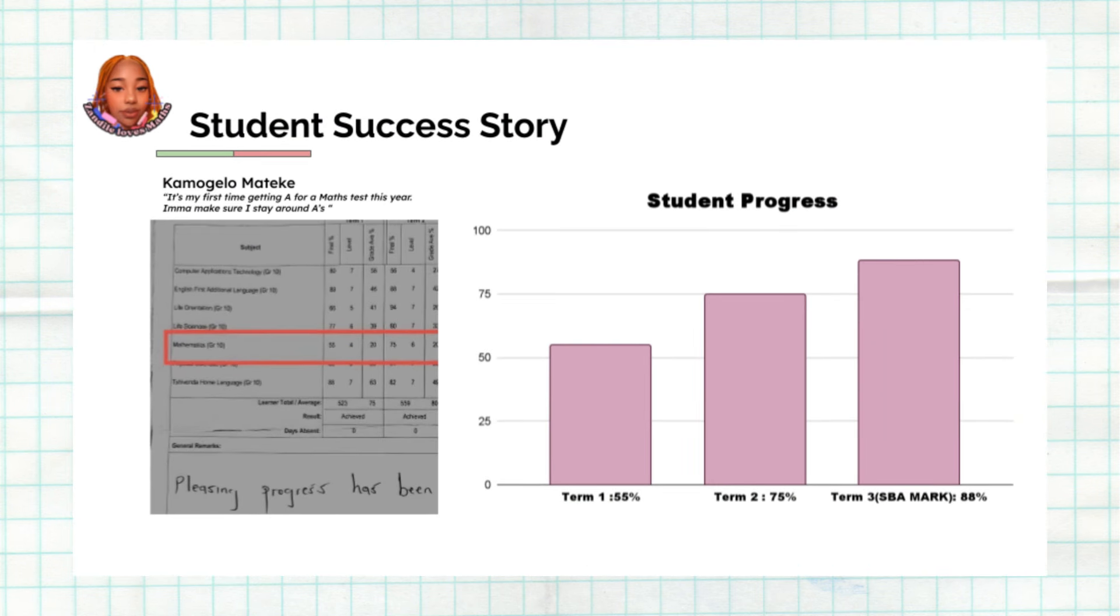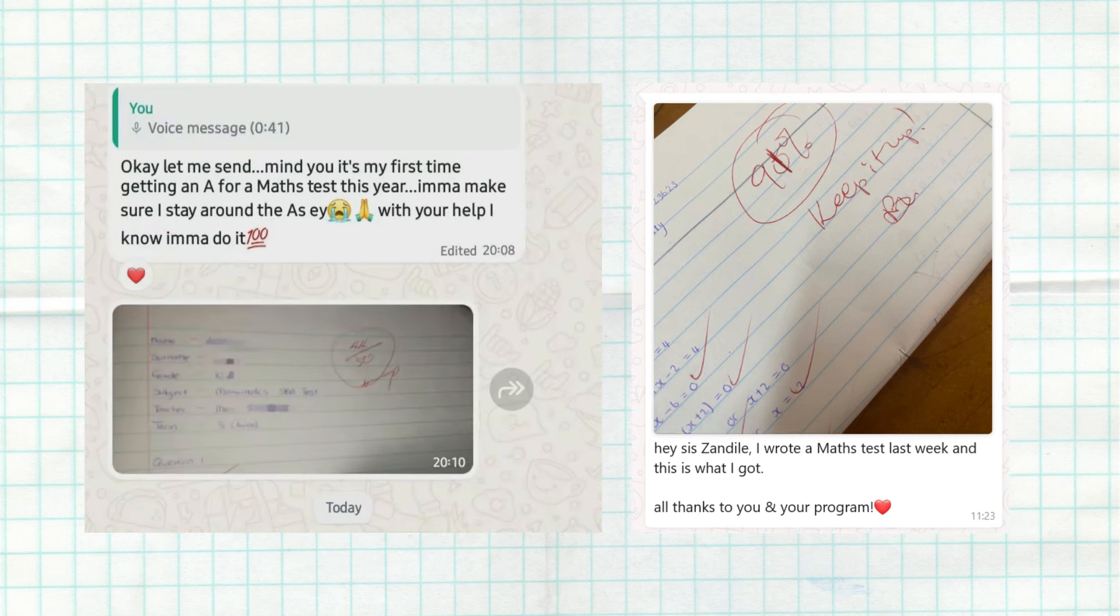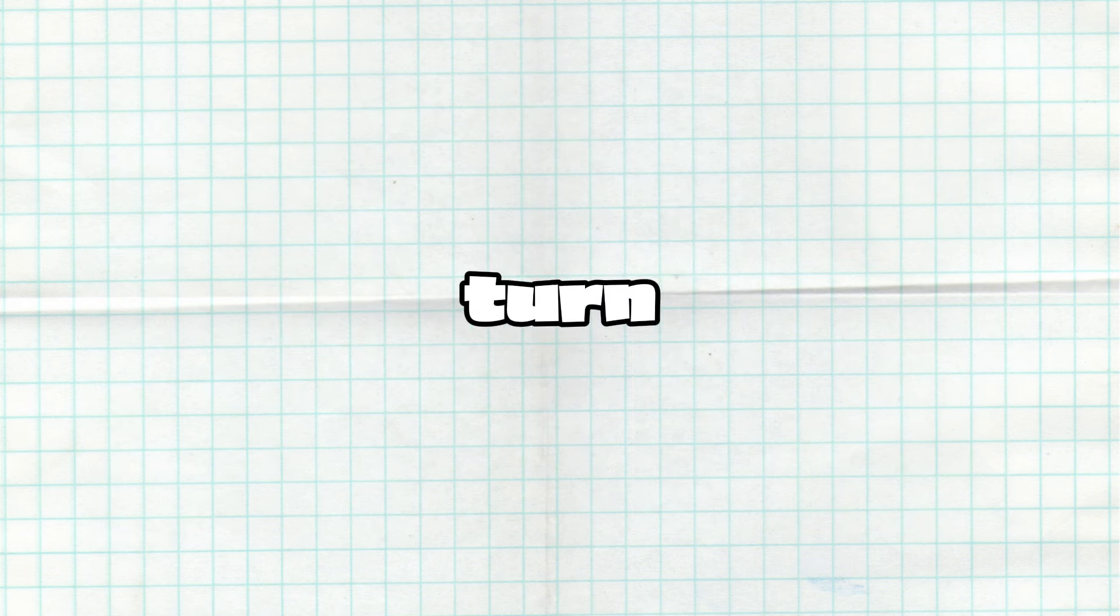Here's another student testimonial. They scored 55% in term one, 75% in term two, 88% in term three, which is the SBA mark. Although we haven't yet received the final term three results, I'm confident the student did well. These results make me so proud and remind me that the hard work I've put into the courses over the past two years has been worth it.